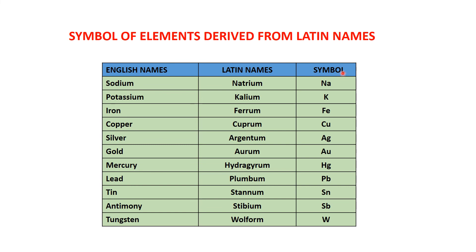Students, these are the symbols that are derived from the Latin names. Sodium in Latin is Natrium and the symbol is Na. Potassium in Latin is Kalium and the symbol is K. Iron, Ferrum, Fe. Copper, Cuprum, Cu. Silver, Argentum, Ag. Gold, Aurum, Au. Mercury, Hydrargyrum, Hg. Lead, Plumbum, Pb. Tin, Stannum, Sn. Antimony, Stibium, Sb. Tungsten, Wolfram, W.